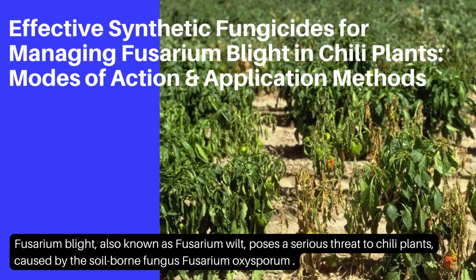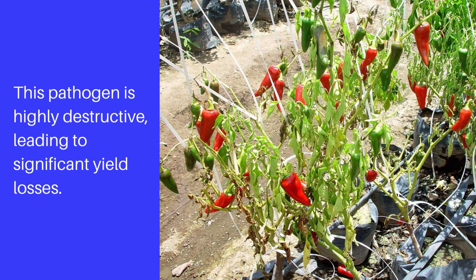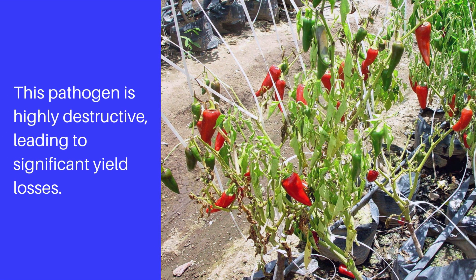Fusarium blight, also known as Fusarium wilt, poses a serious threat to chili plants, caused by the soil-borne fungus Fusarium oxysporum. This pathogen is highly destructive, leading to significant yield losses.